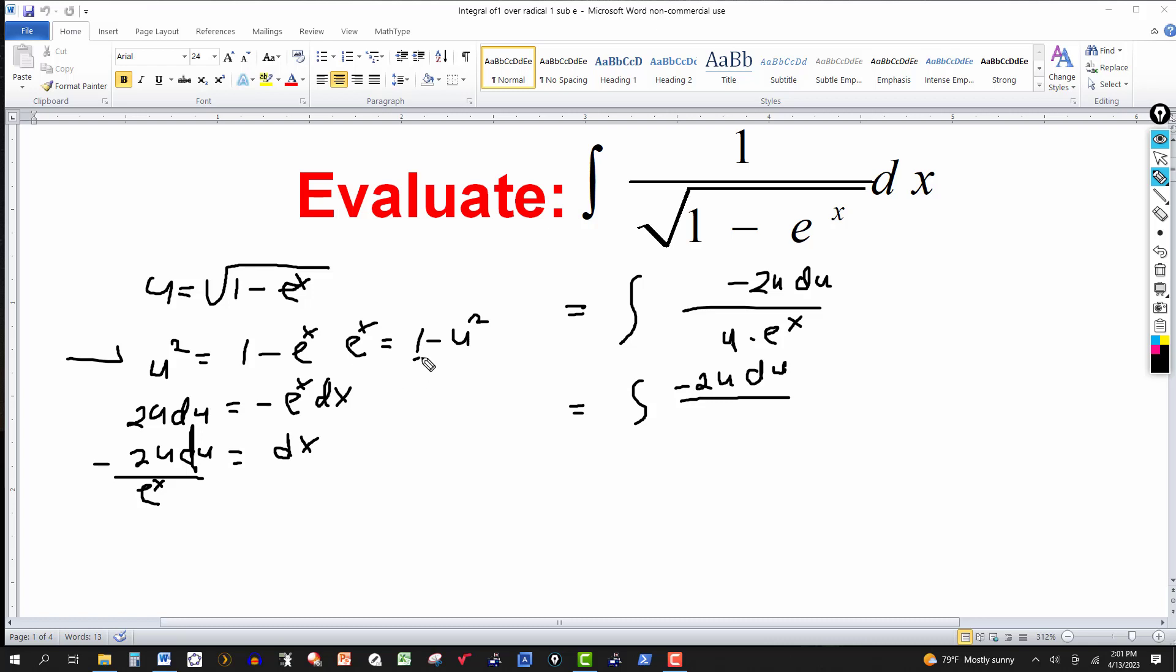So e to the x can be replaced by 1 minus u squared. So this will be u. And then e to the x is 1 minus u squared. This will be equal to, I'm going to bring this denominator or this negative here to the bottom. So this will be the integral of 2u du. And then multiplying by u here. Well, actually I'll do this. This u and this u will cancel. Let's divide those out.